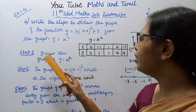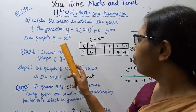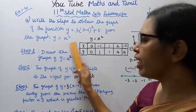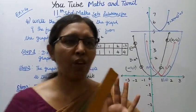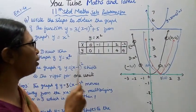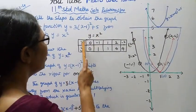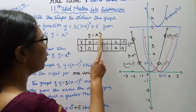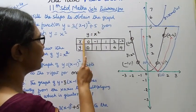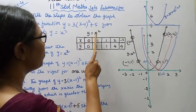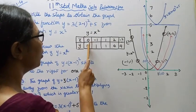Step 1: y equal to x square. Draw the graph of y equal to x square. This is the first graph, where x₀ corresponds to y₀.